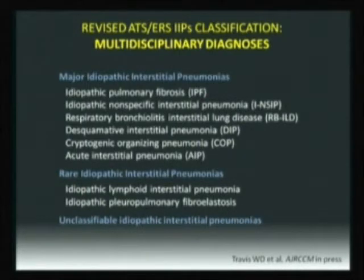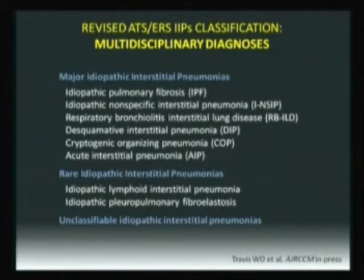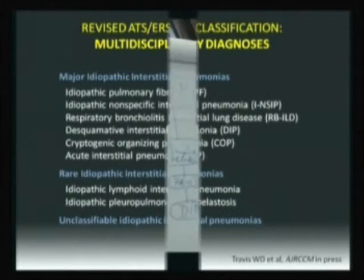And then — this is a major advancement — you have some IIPs which are unclassifiable after lung biopsy. So if you have a patient discharged with a diagnosis of unclassifiable IIP, it doesn't mean that you are not able to make a diagnosis. It means they go into a category that we are not yet able to diagnose. Unclassifiable IIP is now an acceptable diagnosis for patients with idiopathic interstitial pneumonia.